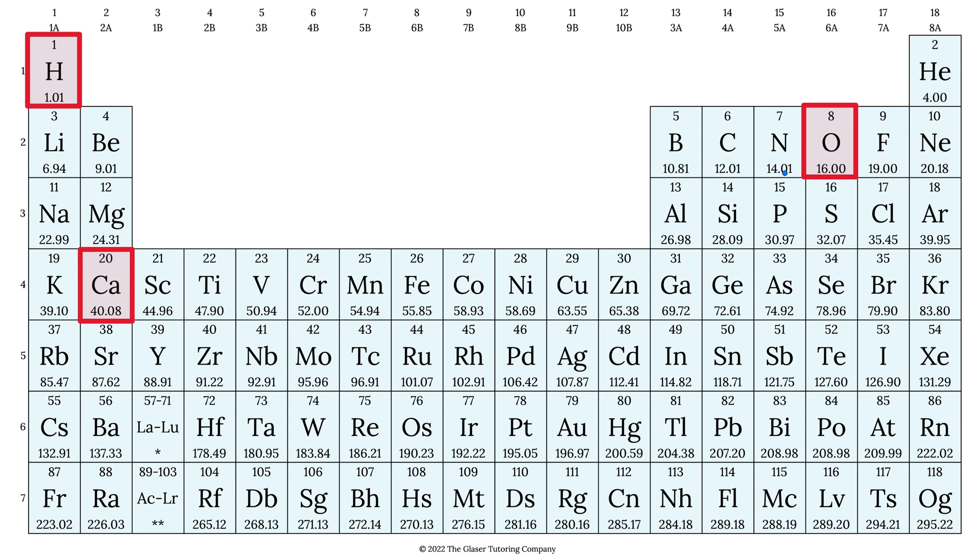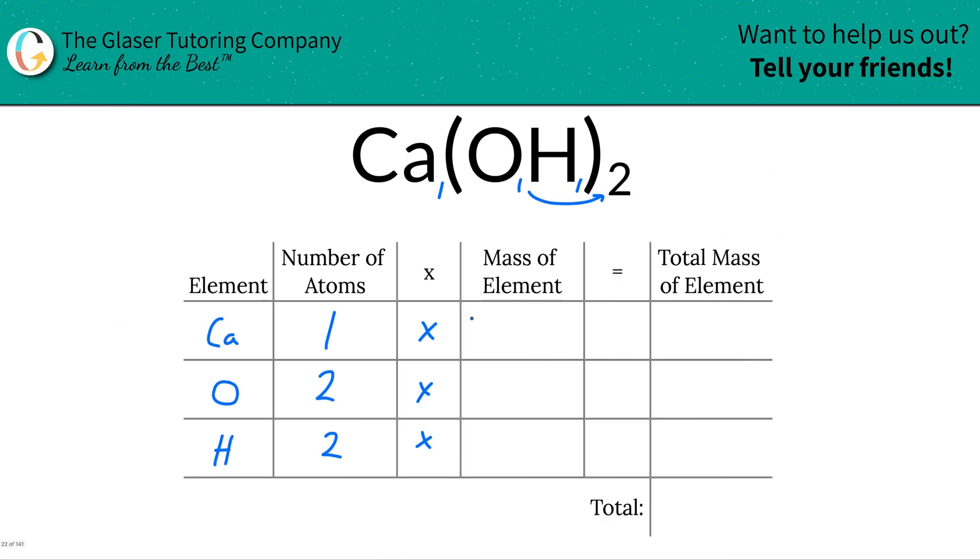So let's write them in. Calcium is 40.08, oxygen has a value of 16, and then hydrogen has the value of 1.01. Okay, so we just write the masses of those elements singularly, and then what we're going to do to find the total mass of the element, of the compound.